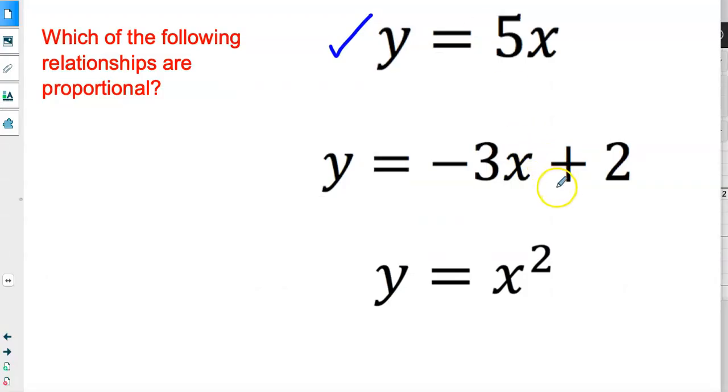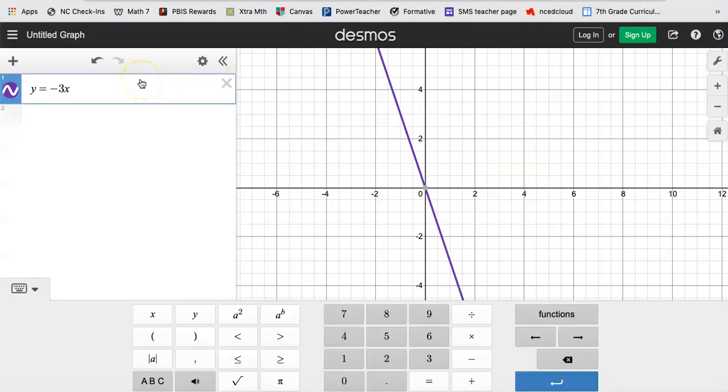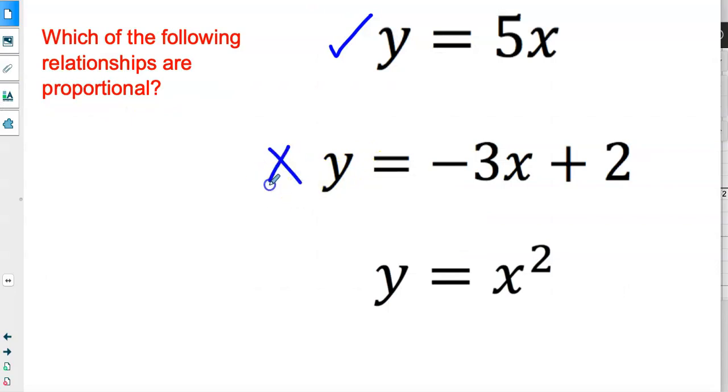But look what happens when I add the 2. So plus 2, and the line shifted from down here where it went through (0, 0) up to go through (0, 2) instead. So if you have a constant added, it's not proportional. I'm just going to put an X, it's not proportional.